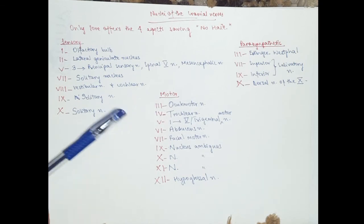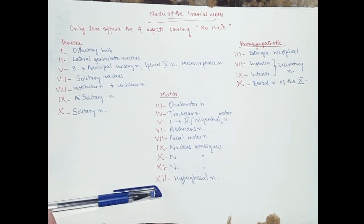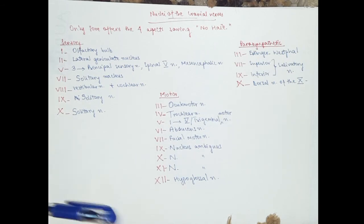We start from three. It's three and four in the midbrain. Five, six, seven, eight in the pons. Nine, ten, eleven, twelve in the medulla oblongata.